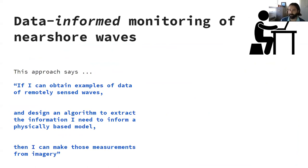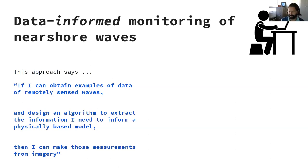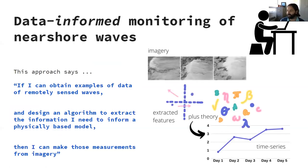Data-informed monitoring of nearshore waves has been the dominant paradigm in coastal remote sensing since at least the early 1990s. This approach says: if I can obtain enough examples of remotely sensed waves and design an algorithm to extract the information I need — that is, extract information from images to directly feed into a physics-based or parametric model informed by physics — then I can essentially make measurements from those images. You have your imagery, you extract features from it, which usually requires the imagery to be collected in a very structured way, and you combine those extracted features with theory to generate time series of the quantity of interest.